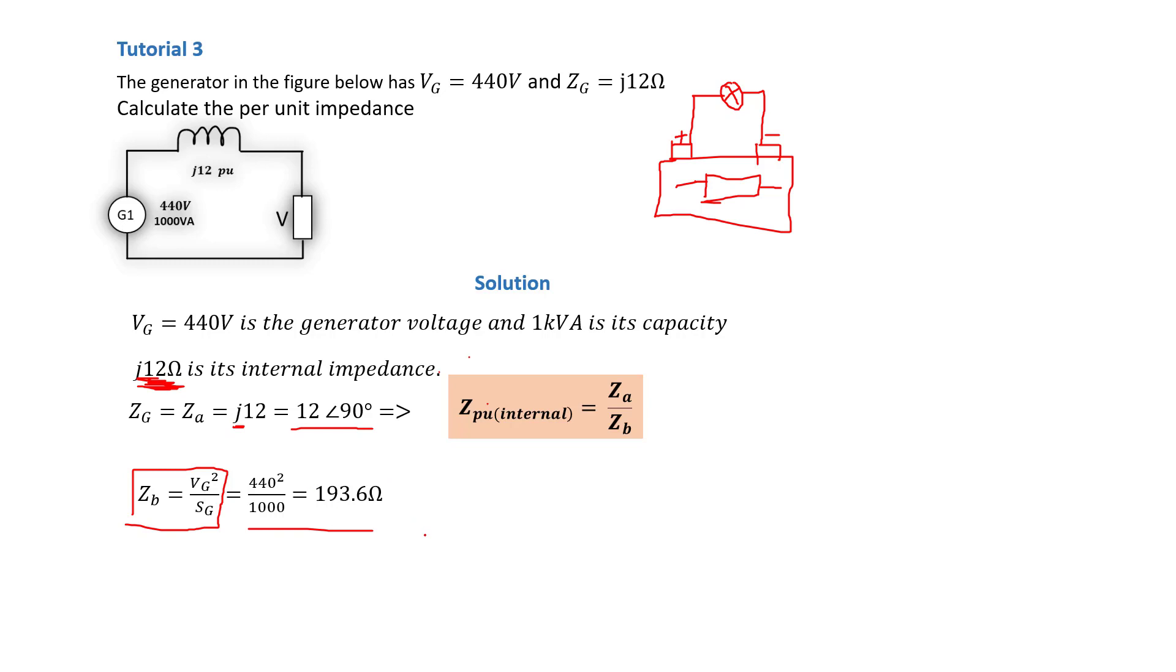Now from this point we know that we just need to replace this value into this formula because we already have this value. And that will give us Z_per unit internal of 12 with an angle of 90 degrees divided by 193.6, and that gives us j0.062 per unit.